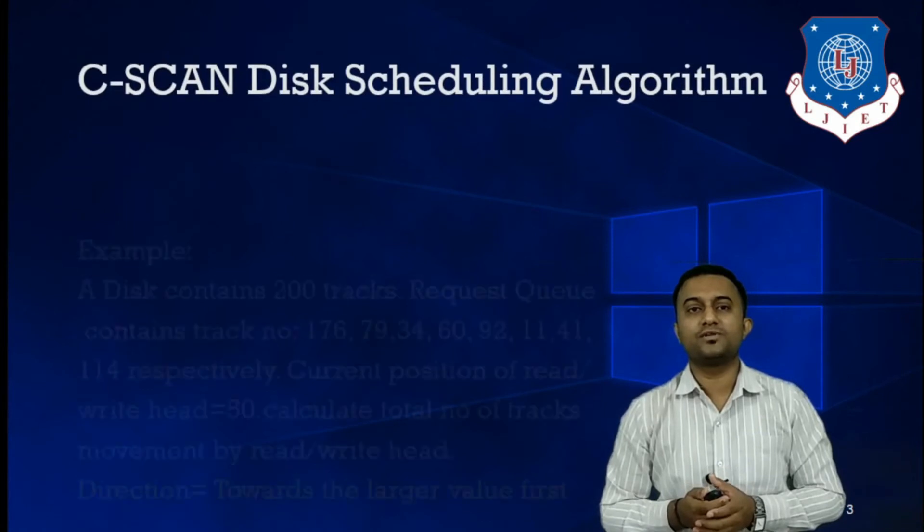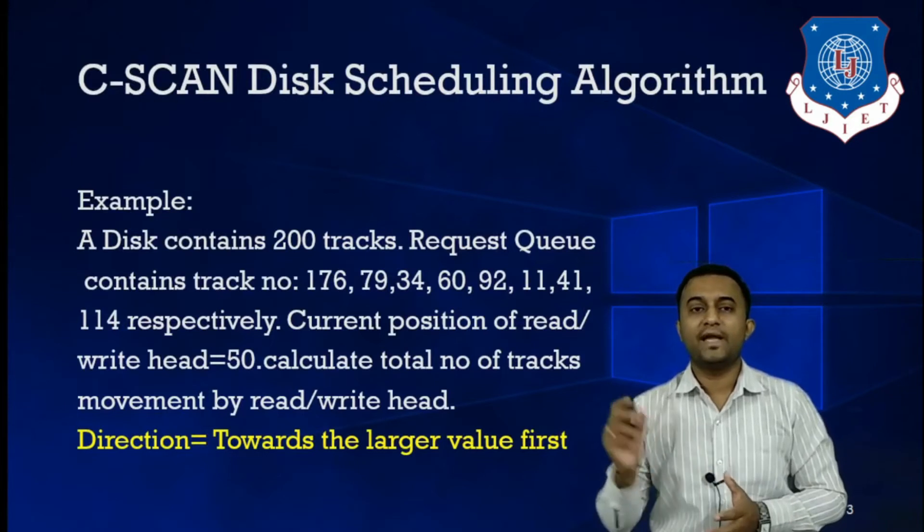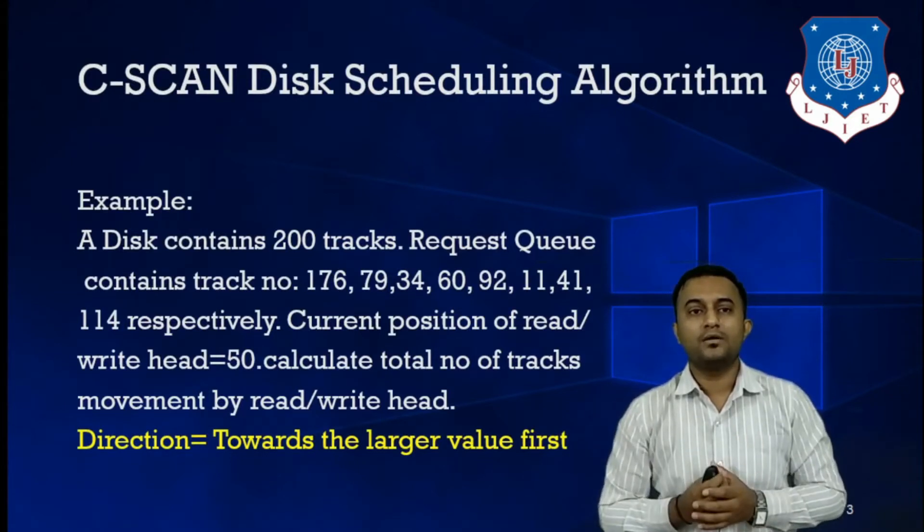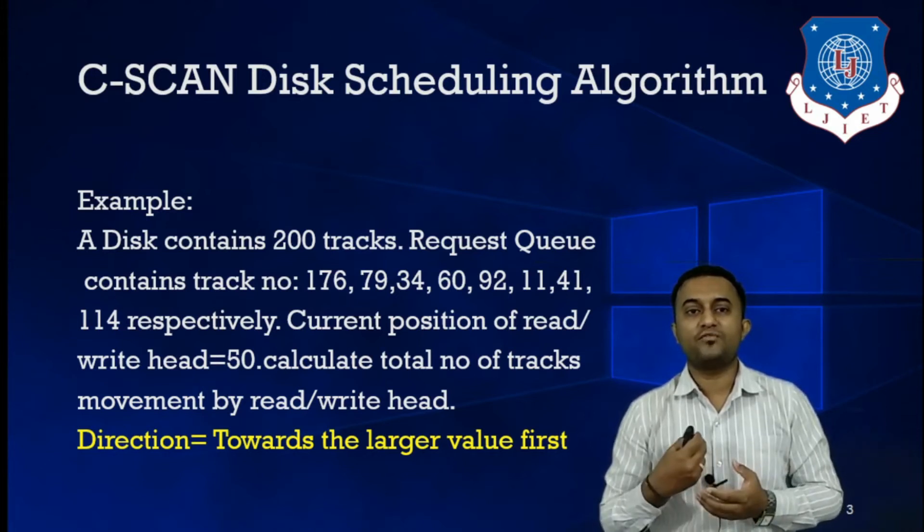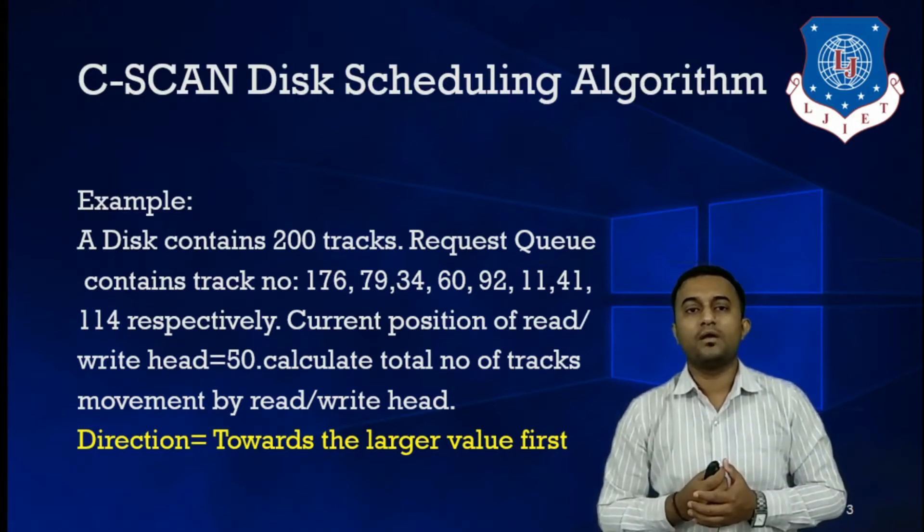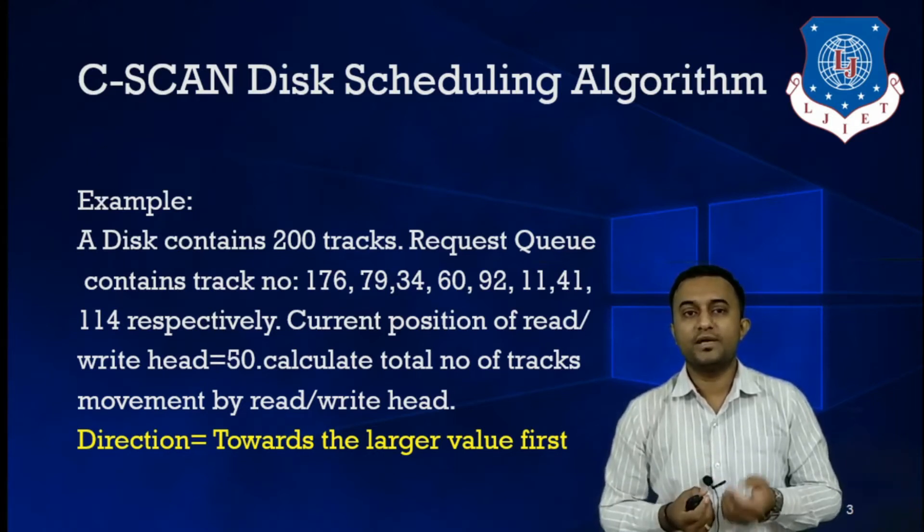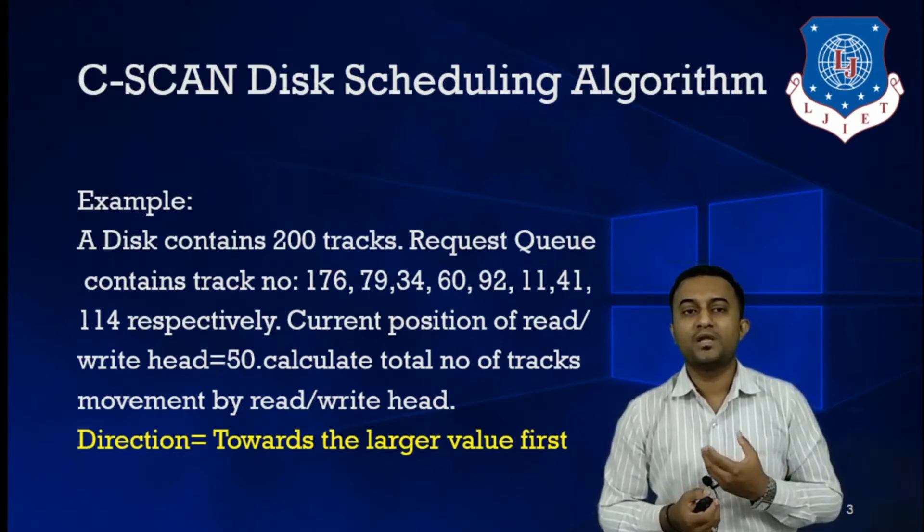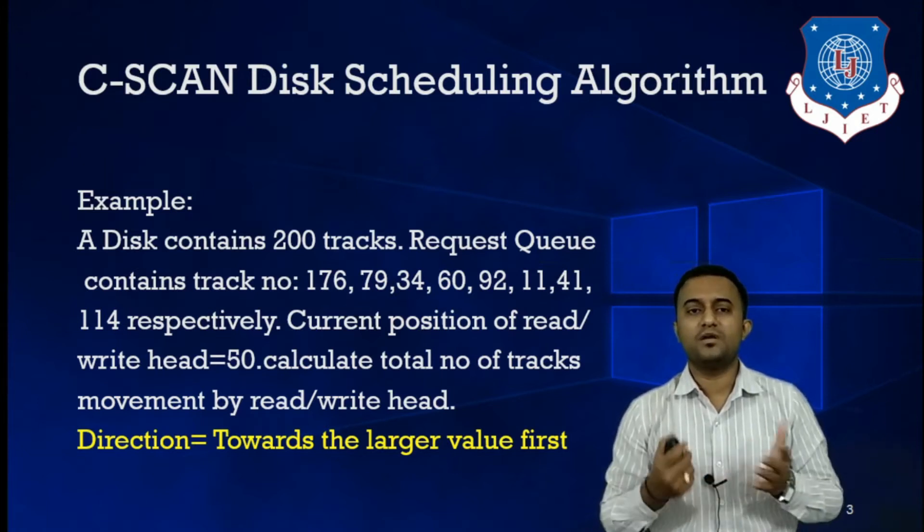Let us discuss the Circular SCAN Algorithm. Again, we have the same set of inputs. A disk contains 200 tracks. Request Queue contains track numbers: 176, 79, 34, 60, 92, 11, 41, 114 respectively. Current position of read/write head is 50. We need to calculate total number of tracks movement by read/write head. That is the reason why we are taking the same number of tracks and same track numbers as far as the request queue is concerned, and the same current read position, which is 50, so that we can compare the performance of different algorithms.